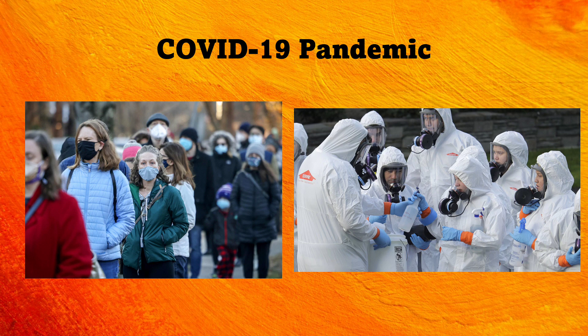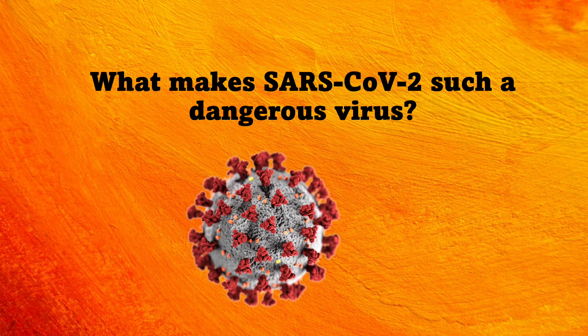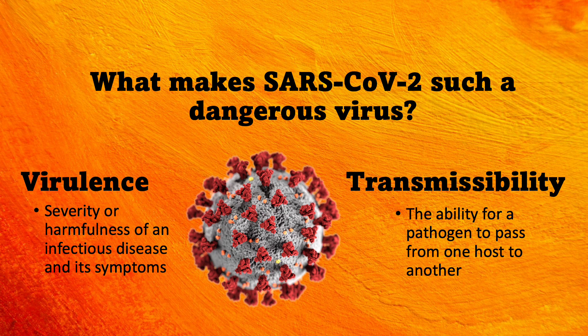So what makes SARS-CoV-2 such a dangerous virus, and why did we have to take such extreme public health measures to protect ourselves from it? The general impact of a virus can be defined by two factors: virulence and transmissibility. Virulence is the severity or harmfulness of an infection or the symptoms it presents. Transmissibility is the ability for a pathogen to pass from one host to another. SARS-CoV-2 has both high virulence and high transmissibility, making it a very unique virus.